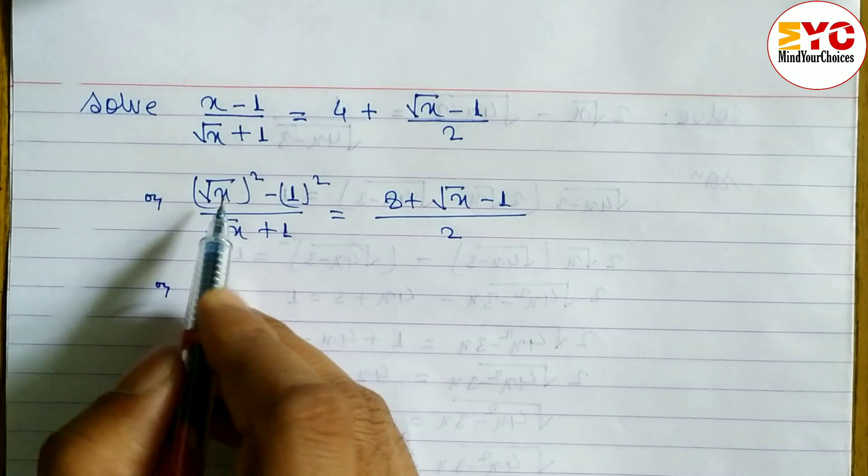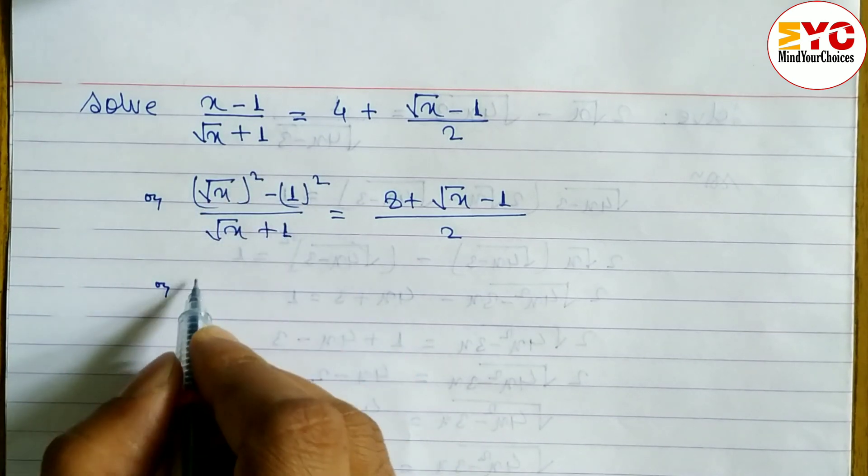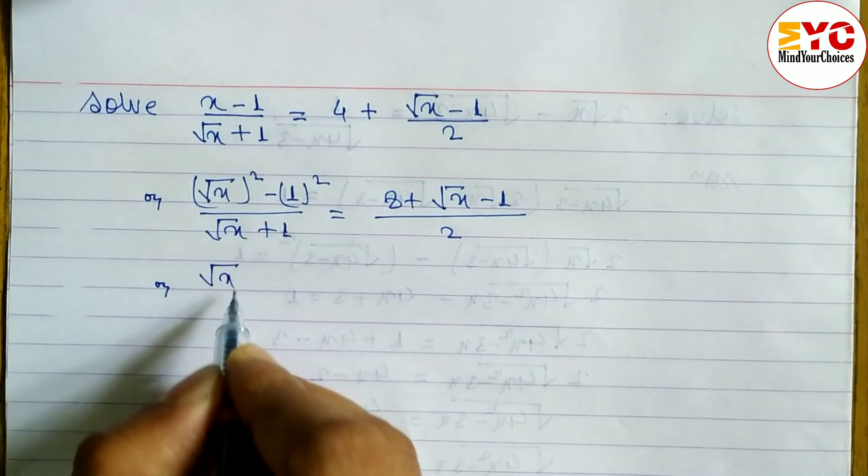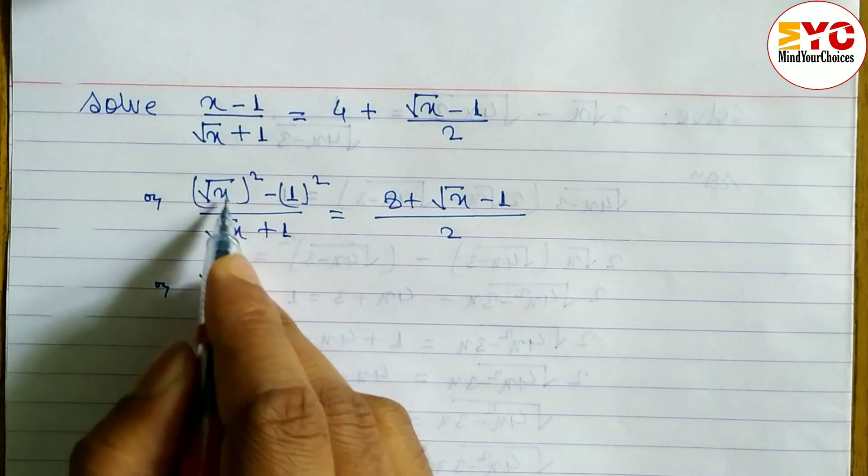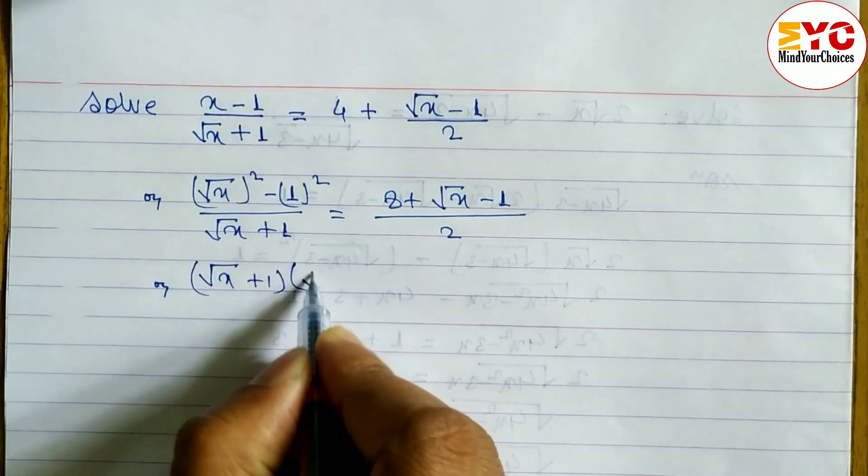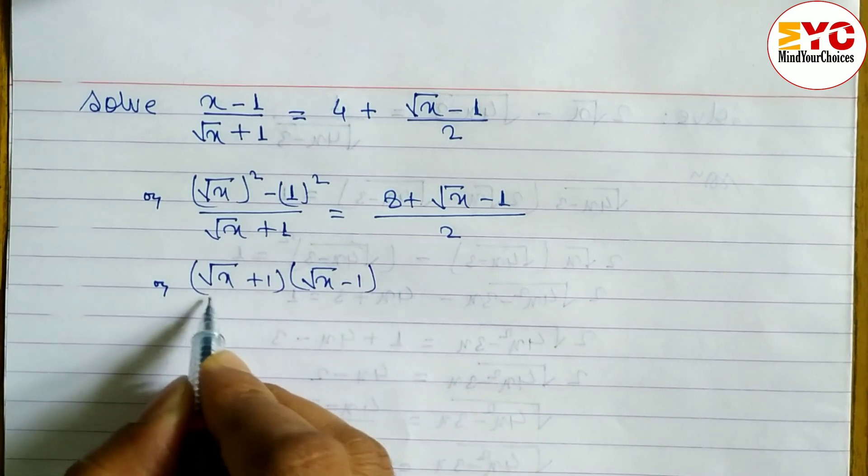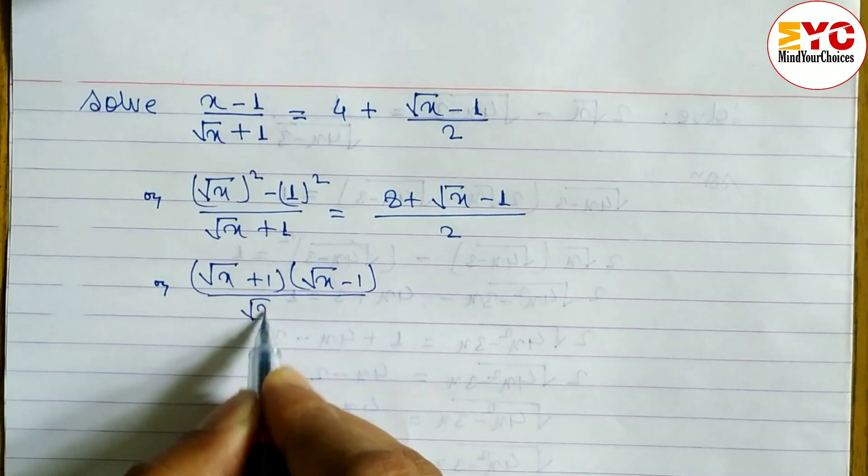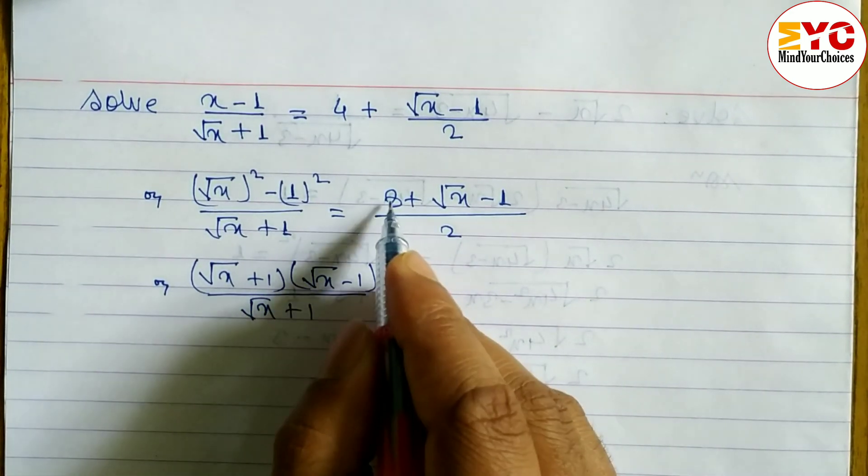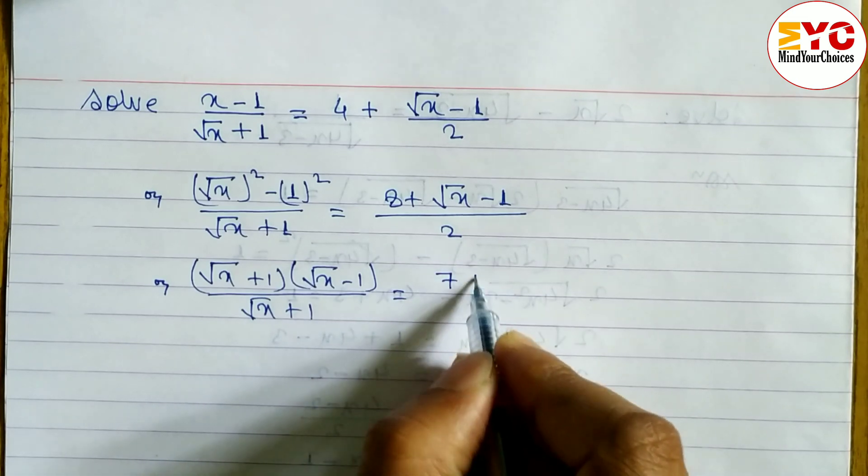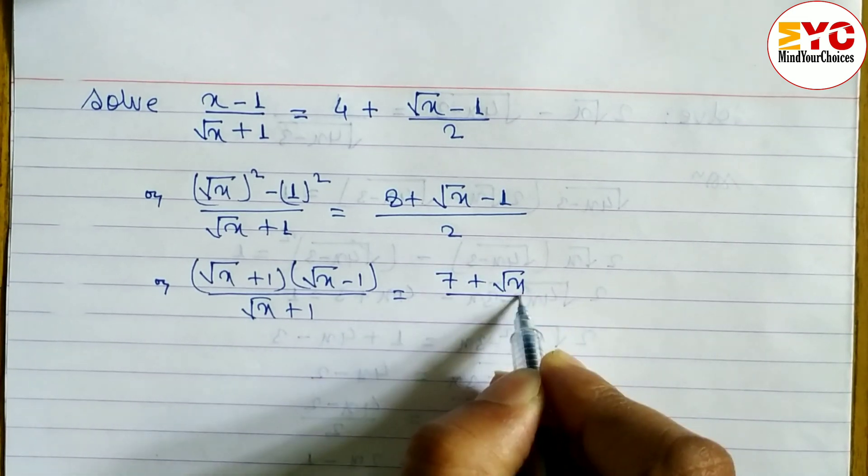Now we use the formula for a² - b², which is (a + b)(a - b). In place of a we have √x, so we write (√x + 1)(√x - 1) divided by √(x + 1) equals (7 + √x)/2.